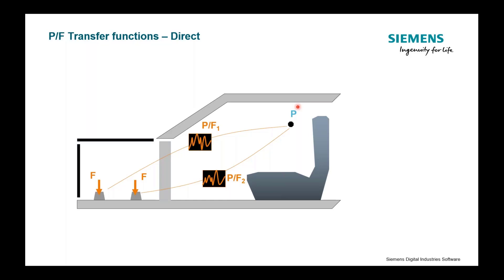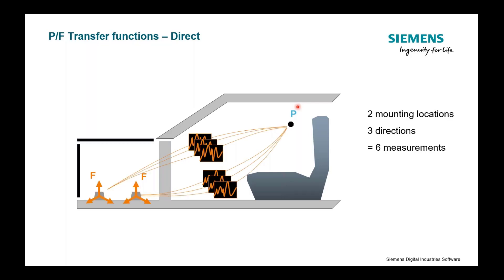In reality, I don't usually just have two engine mount locations, and I don't just care about one direction. It's more likely I'm going to be measuring three transfer functions at each mount location, because I've got a vertical, lateral, and fore-aft — X, Y, and Z — component to that force. So in this simplified case with two locations and three directions each, I'm measuring six FRFs or P over Fs to quantify the structure-borne/airborne interaction. Taking my impact hammer and hitting each location in three directions plus averages — you can see how measurement time grows very quickly. So we'd be interested in a more efficient way to do this.